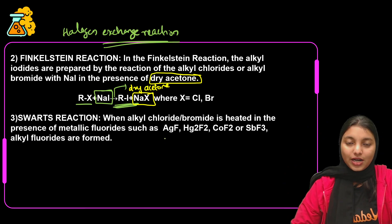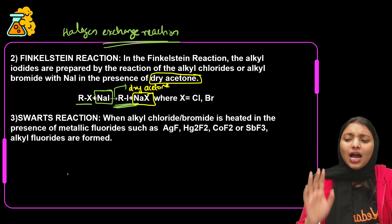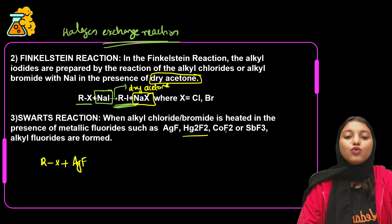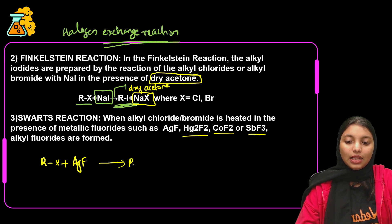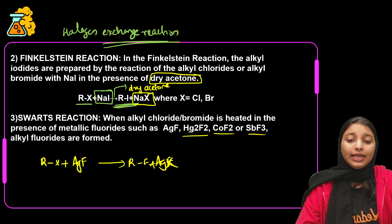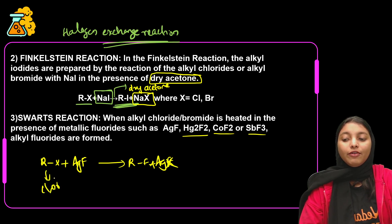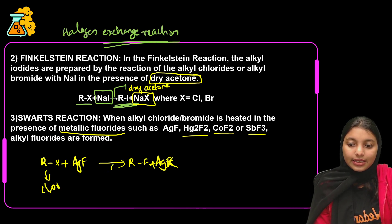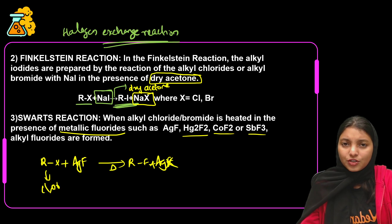Next is Swartz Reaction. Swartz Reaction is very important. Fluoroalkane is prepared by this method. That's why we take RX and treat it with metal fluorides: AgF, Hg2F2, CoF2, SbF3. We get the corresponding fluoride plus AgX. We treat the halide — chloride and bromide as RX — with metallic fluoride and apply heat, so we get our products. Finkelstein Reaction and Swartz Reaction are now clear.